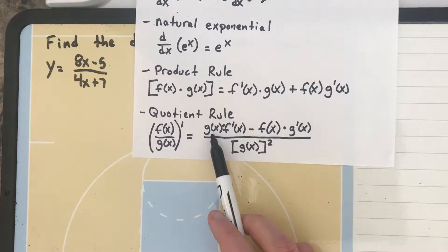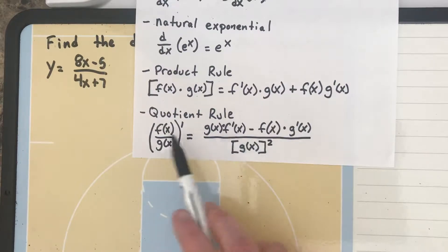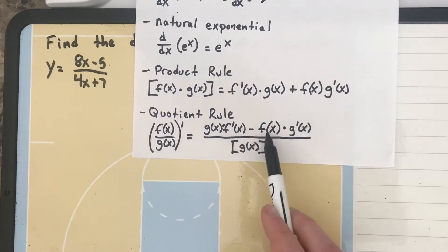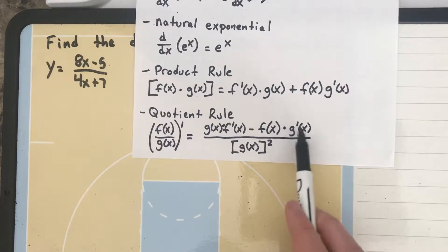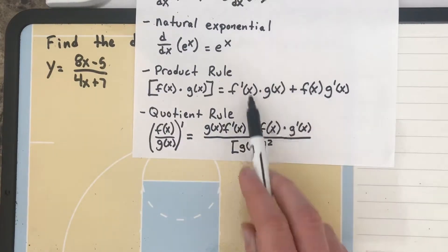Then we're going to take the original function on the bottom, g of x, multiply it times the derivative of the top function minus the function on top times the derivative of the second function, which is on the bottom. If you notice, it's pretty close to the product rule.